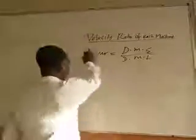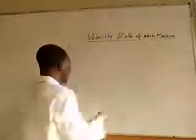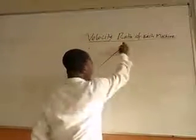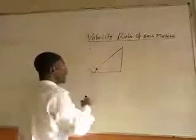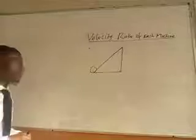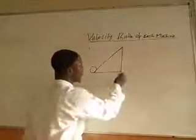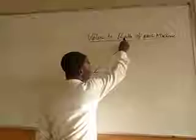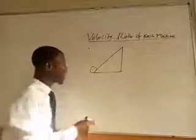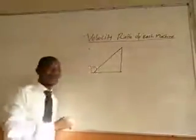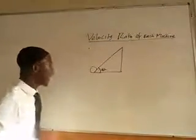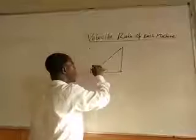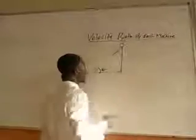The second machine is the inclined plane. The velocity ratio for an inclined plane is something we can easily derive. An inclined plane looks like this — it is normally used to load lorries. Let's say we are asked to carry a load from one point to a higher point, with this angle of inclination, and this is the load.